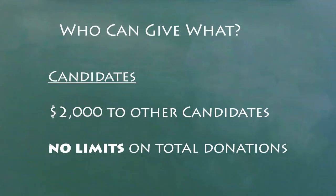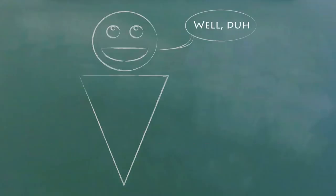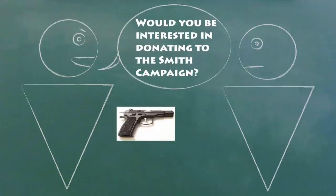Other candidates can give each other up to $2,000. A bundler is someone who collects, or bundles, other people's contributions for the campaign, basically serving as a mobile fundraiser. It's all okay as long as you don't get too enthusiastic.